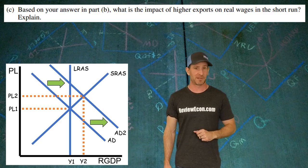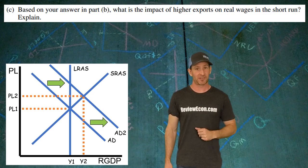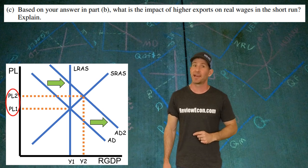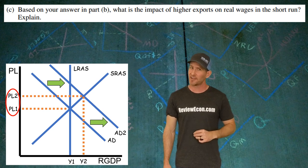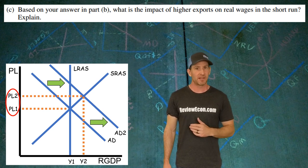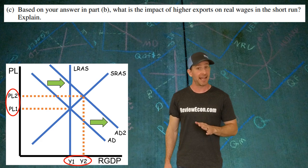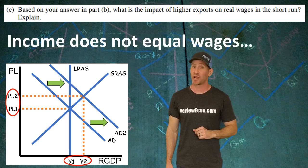Part C is a little bit tricky. In the last part, we saw an increase in the price level. Based on that increase in the price level, what happened to real wages? A lot of people get tripped up on this question because they see that national income increased. National income is not the same thing as wages.